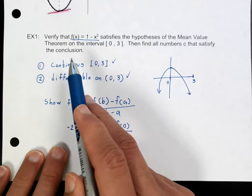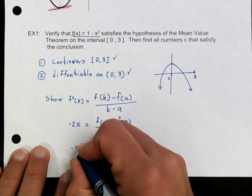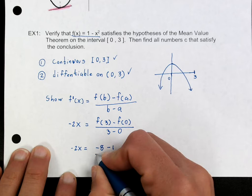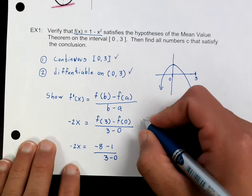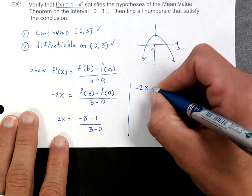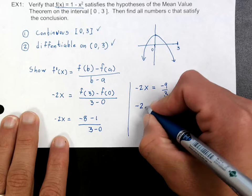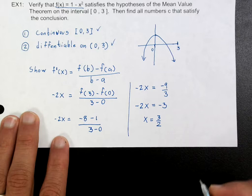F of 3 comes from the original function: plugging in 3 gives 1 minus 9, which is negative 8. And f of 0 would be 1. So we have negative 2x equals negative 8 minus 1 over 3, which gives negative 9 over 3, which equals negative 3. Therefore x equals 3 halves.